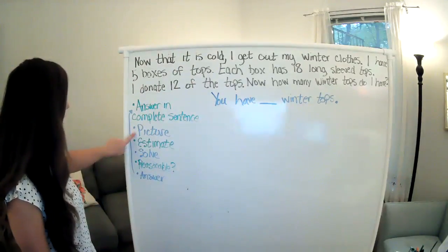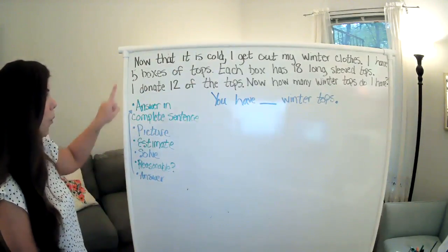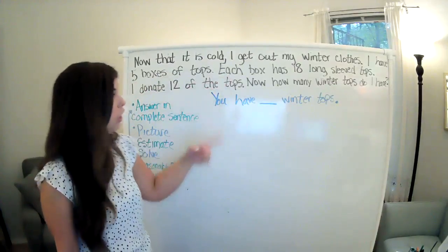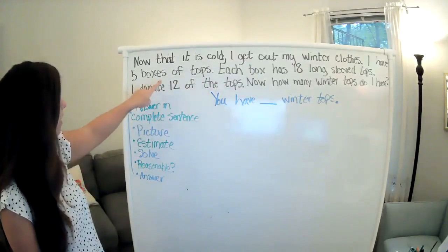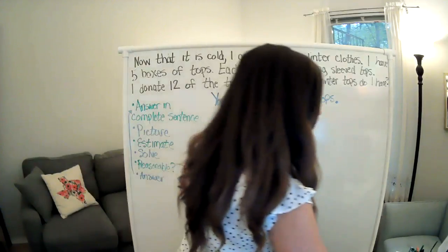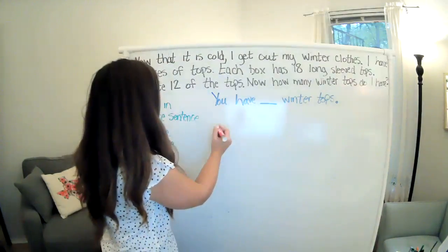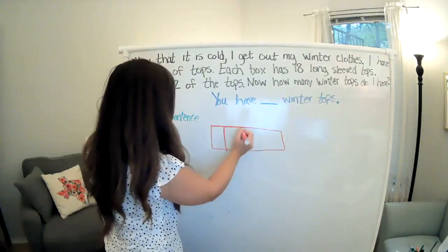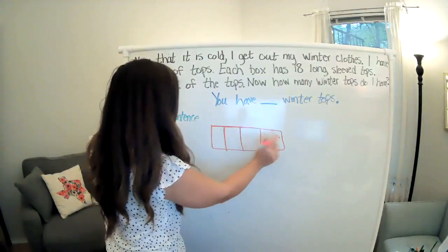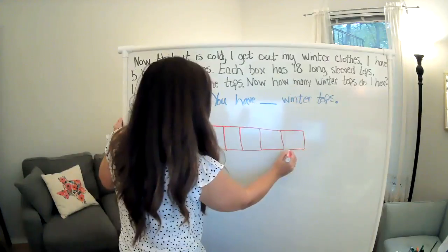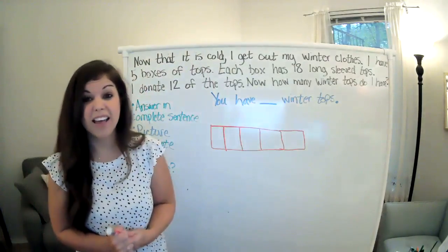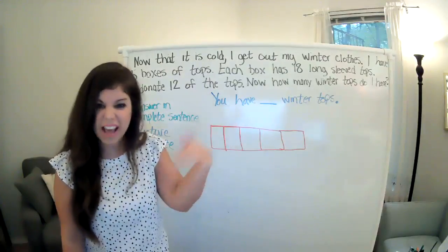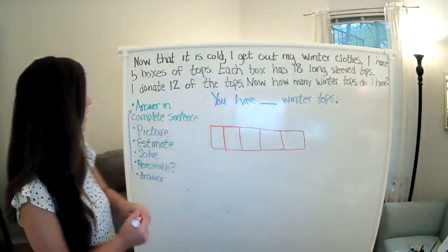Then it says to draw a picture. So when I'm reading the problem and I'm imagining it, it will help me draw the picture. So in my problem, it said that I had five boxes of tops. So I'm going to draw my five boxes of tops: one box, two box, three box, four box, and five box. I am pretty good at math and I'm a really kind person, but I am not the best artist. And that's okay. You can still see that I have five boxes.